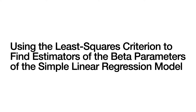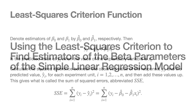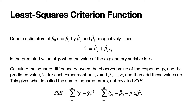Now we're going to look at using the least squares criterion to find estimators of the beta parameters of the simple linear regression model. Denote estimators of beta zero and beta one by beta zero hat and beta one hat respectively. Then y hat sub i, which equals beta zero hat plus beta one hat times x sub i, is the predicted value of the response variable y sub i when the explanatory variable equals x sub i. We calculate the squared difference between the observed value y sub i and the predicted value y hat sub i for each experimental unit i from one to n, then add these up. This gives what is called the sum of squared errors, abbreviated SSE.